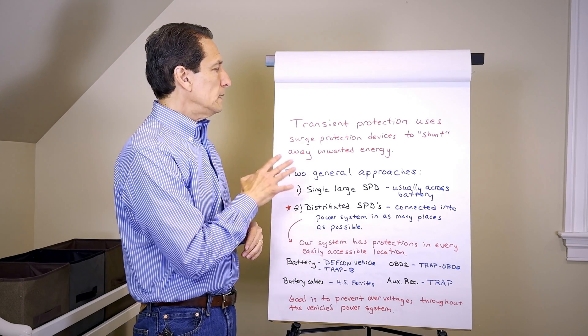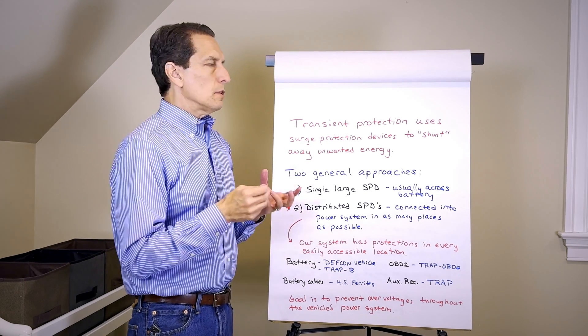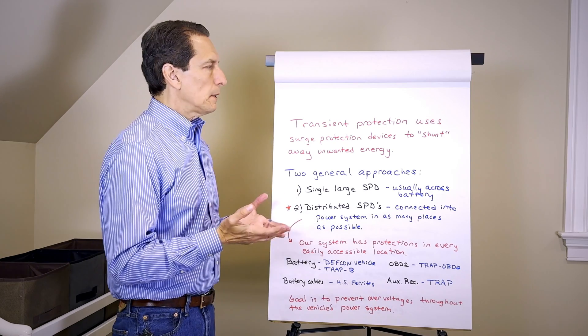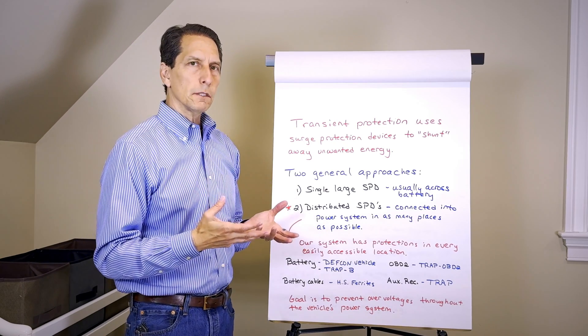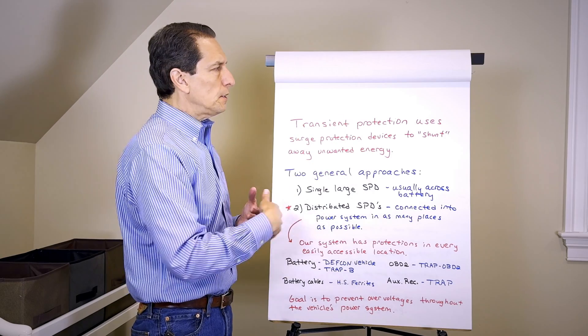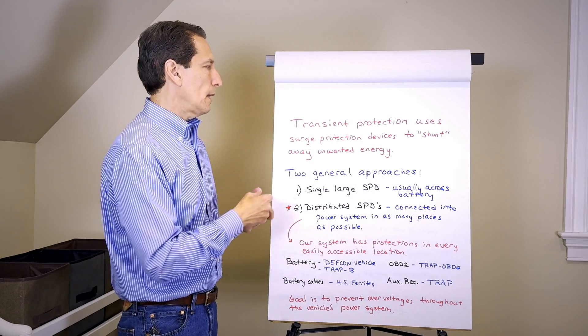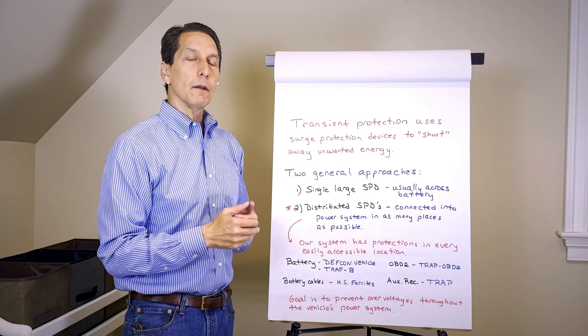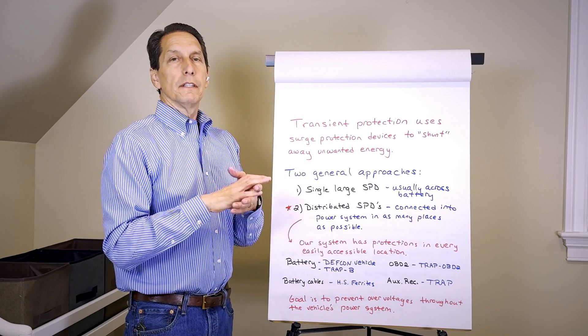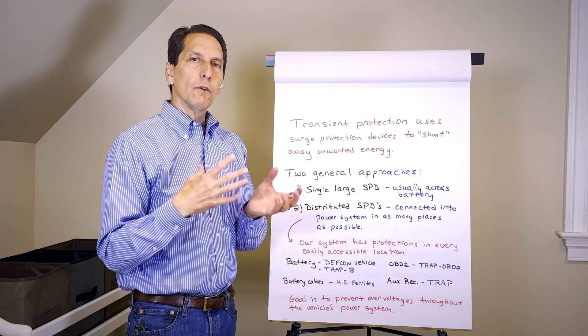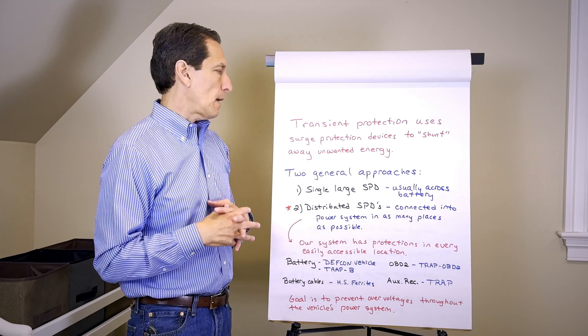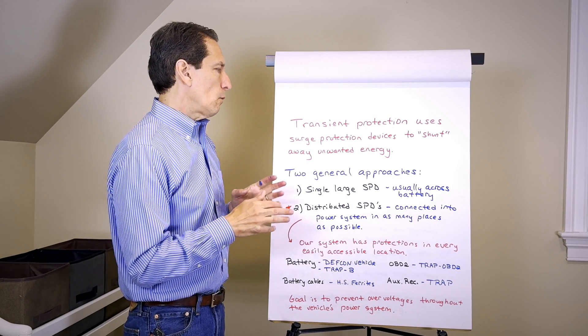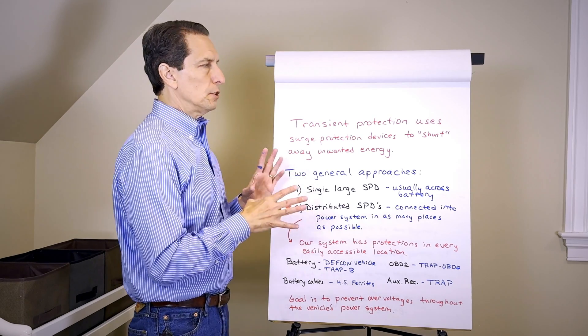Transient protection uses specific devices called surge protection devices or sometimes transient suppression devices to shunt away, which means to drain away, unwanted energy. When the voltage gets high enough, they turn on and start draining away that unwanted energy and limiting that maximum voltage.